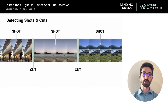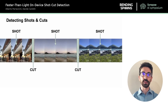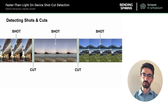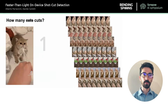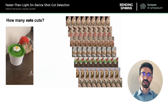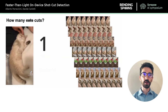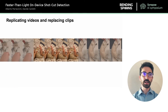A video is composed of multiple shots or scenes which are connected by cuts, and our goal is to find where each cut is located. In this work we specifically address social media videos, and you'll see why this can be surprisingly challenging. Here for example we can see six different cuts joining different parts of the video.